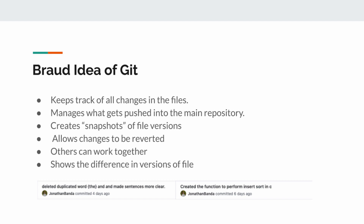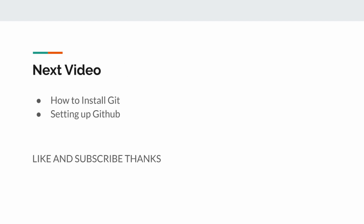As you do this, your Git repository starts to build history. You work on it today, you work on it tomorrow — things are being committed and pushed, creating snapshots. You can revert to these snapshots to see what broke. For example, if you committed multiple lines of code and nothing is working, you can identify what went wrong.